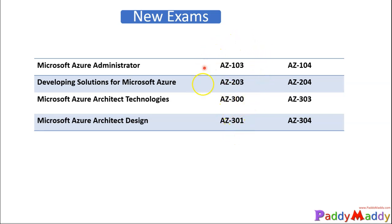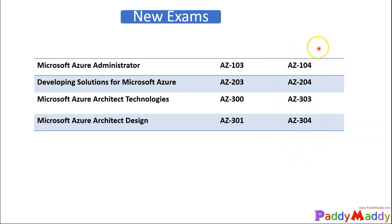Microsoft has retired few of the exams and made new versions available. The earlier AZ-103 is replaced with AZ-104, but the certification name remains the same — the content has been enhanced to measure more skills within the Microsoft Azure world. Similarly, AZ-203 was updated with AZ-204, AZ-300 was retired with AZ-303, and AZ-301 was retired with AZ-304.